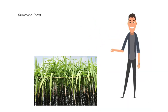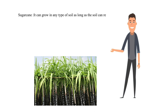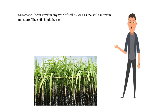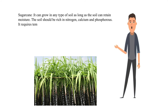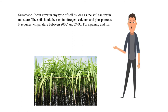Sugarcane can grow in any type of soil as long as the soil can retain moisture. The soil should be rich in nitrogen, calcium, and phosphorus. It requires temperatures between 20 degrees Celsius and 24 degrees Celsius. For ripening and harvesting, dry winter is ideal.